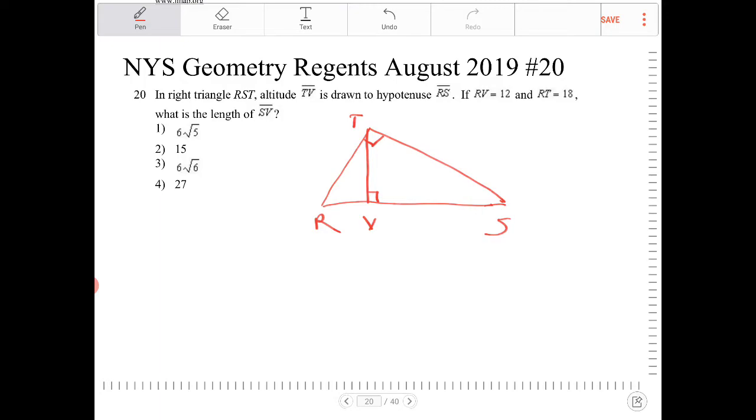If RV is equal to 12 and RT is equal to 18, what is the length of SV?